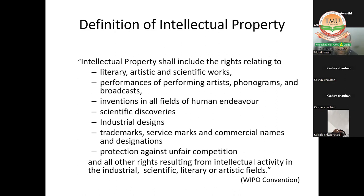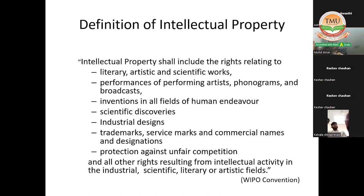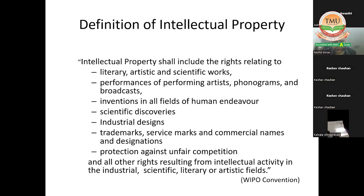For inventions in all fields of human endeavor, the specific IP protection is called a patent. Please don't confuse these terms — IP is a broad term. Copyright is also an IPR, patent is also an intellectual property, trademark is also an intellectual property. These are specific names given to specific types of intellectual creations. If you come out with a literary, artistic, or scientific work, the specific IP protection is copyright. If you come out with an invention, the specific IP protection is a patent.